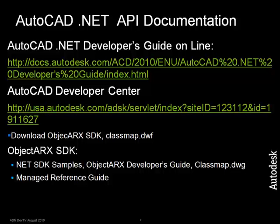When you work through the labs, you may want to find more information about the AutoCAD .NET API. For this, you can use the AutoCAD .NET Developer's Guide. Another resource is the AutoCAD Developer Center, where you can download the .NET Visual Studio Wizard — you will need the wizard for Lab 2. There is also a link on the Developer Center where you can download a DWF file, which is an object model of the AutoCAD .NET classes. I would also recommend downloading the ObjectARX SDK to get the documentation and the .NET samples.